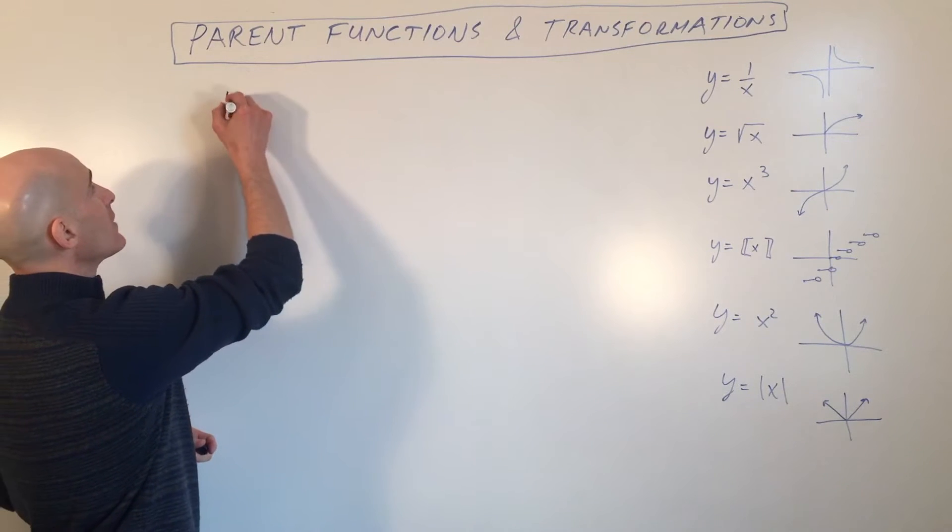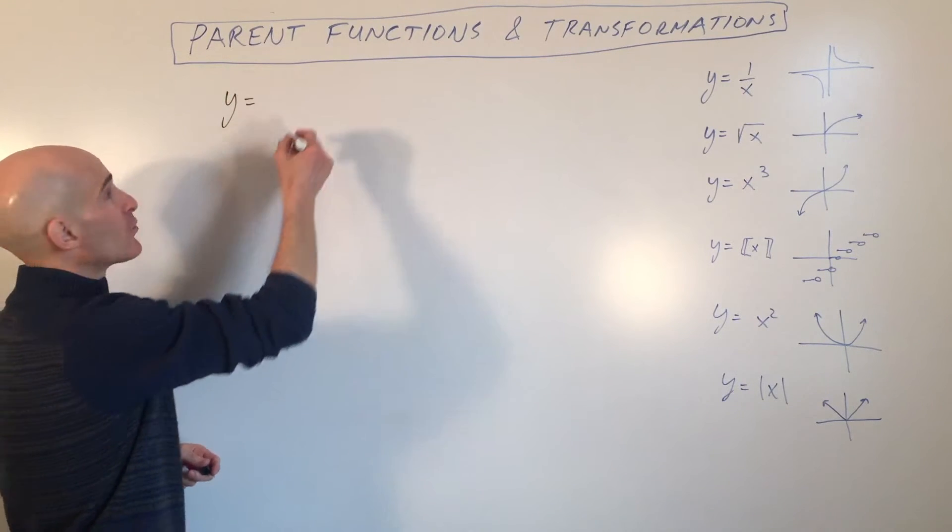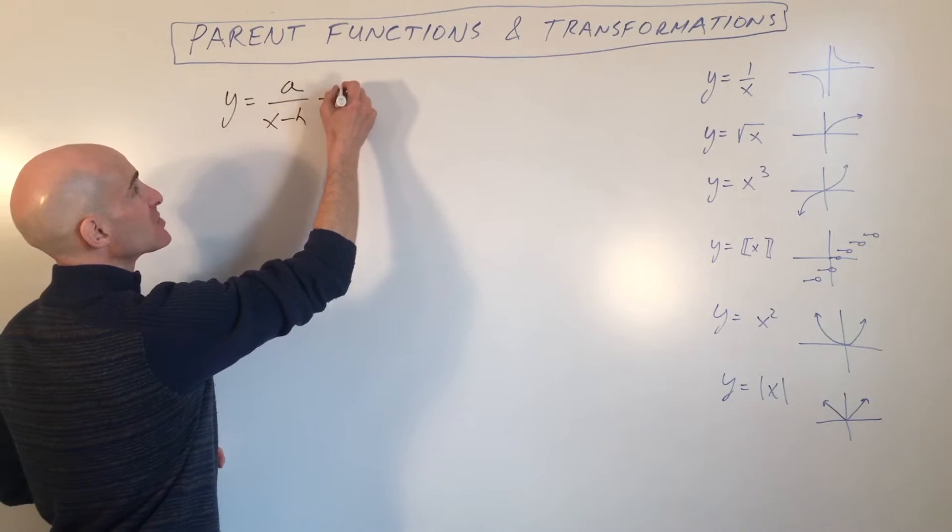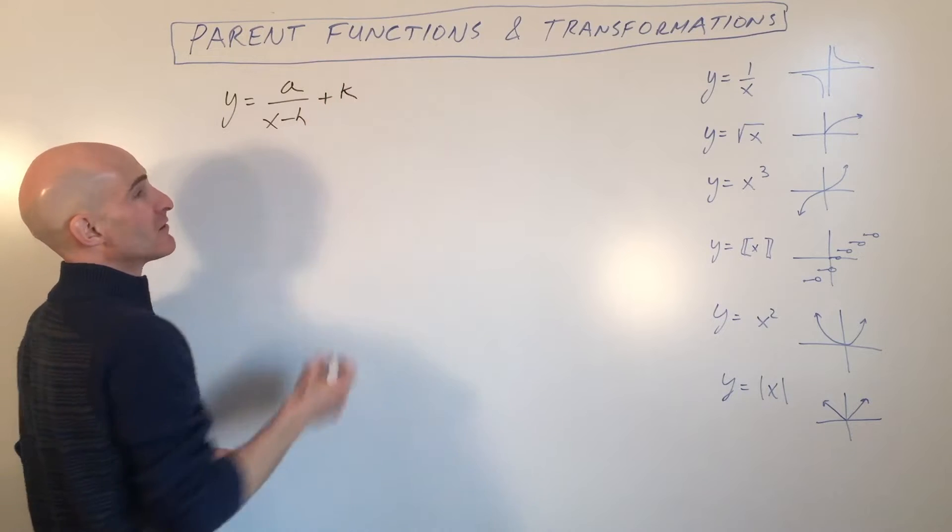y equals 1 over x, that first one. We can write this in a much more general way, such as y equals a over x minus h plus k.